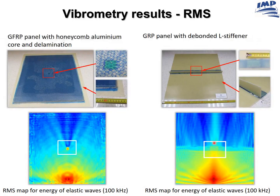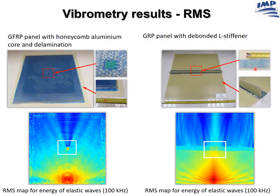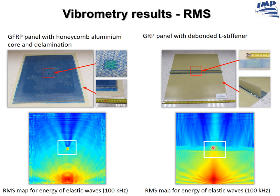Another example is shown for a GFRP panel — a sandwich structure with an aluminum core and a simulated delamination. The result at the bottom shows clear wave scattering at this defect and visualization of the damage position. The example on the right shows a GFRP panel with a stiffener that was locally debonded to investigate wave propagation in such a structure. The result shows that the debonded region acts as a tunnel for the wave, allowing it to pass through, while the remaining bonded part of the stiffener reflects the wave back and stops its propagation.